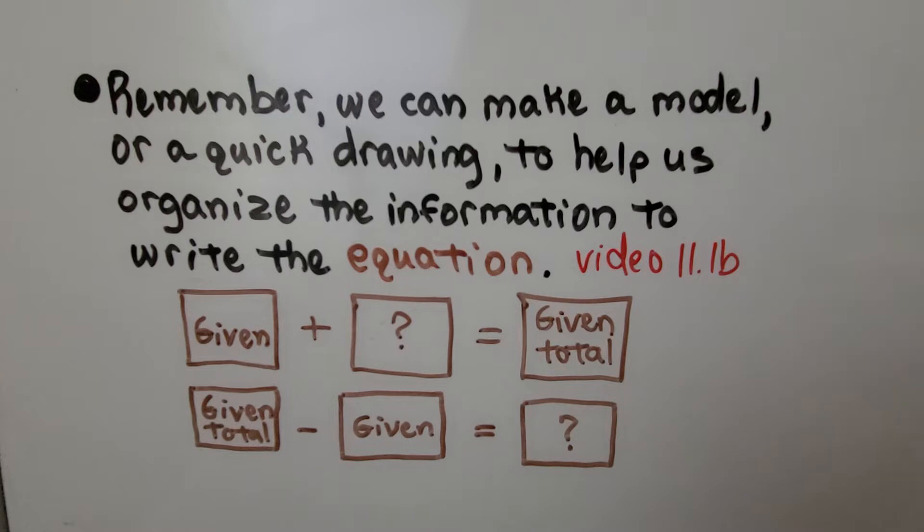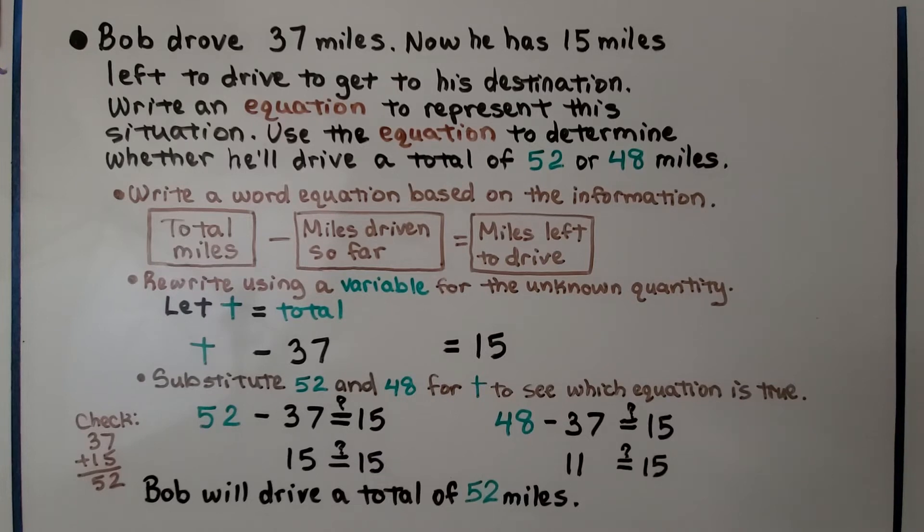Remember, we can make a model or a quick drawing to help us organize the information to write the equation. We learned that in the last video, 11.1b, and these are linked in the description. Bob drove 37 miles. Now he has 15 miles left to drive to get to his destination. Write an equation to represent this situation and use the equation to determine whether he'll drive a total of 52 or 48 miles.